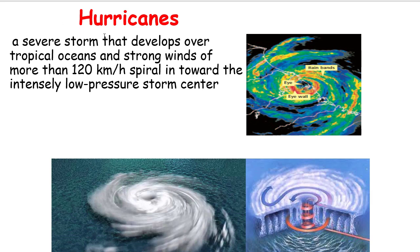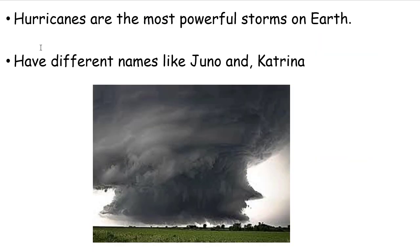A hurricane is a severe storm that develops over tropical oceans with strong winds of more than 120 kilometers per hour. The winds spiral - meaning they move in a rotating pattern - inward toward an intensely low pressure storm center. Hurricanes are the most powerful storms on Earth.